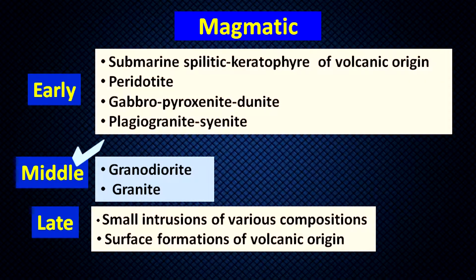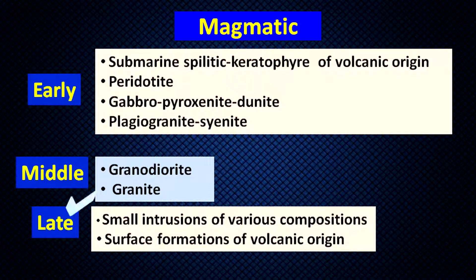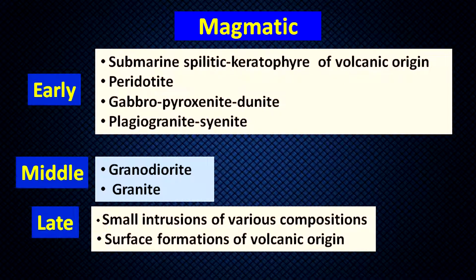In the case of middle magmatic deposits, two types of rocks — granodiorite and granite — are responsible for the formation of ore deposits. The third subdivision is late magmatic deposits. Late magmatic deposits are small intrusions of various compositions. In the early and middle stages their composition is well defined, but in the late stage, composition is not well defined and size is very small. Surface formation of volcanic origin ore deposits is also classified in this category.